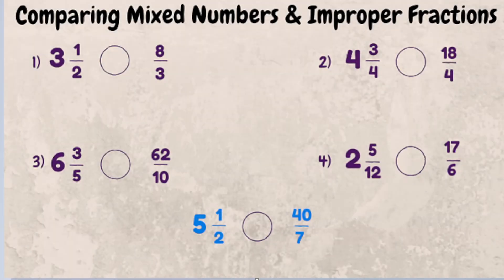This video is going to walk you through how to compare mixed numbers to improper fractions. A mixed number is simply a fraction that includes a whole number plus a proper fraction portion. An improper fraction is a fraction that has a numerator that is larger than the denominator. Both of them say the same thing, just said differently.